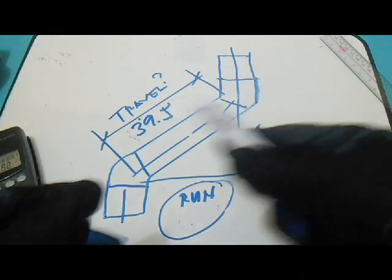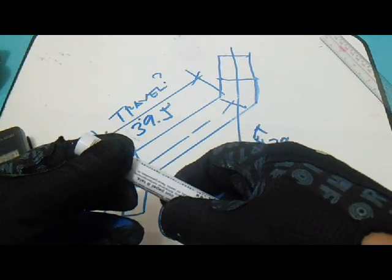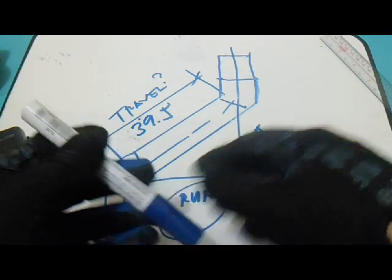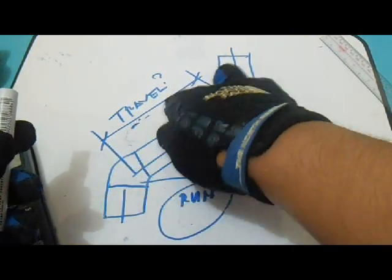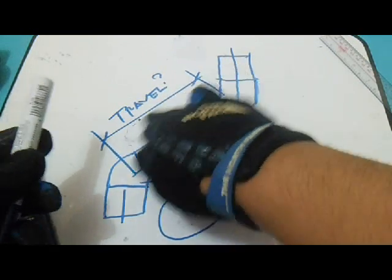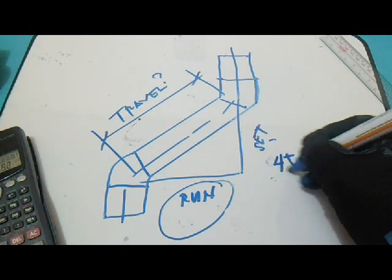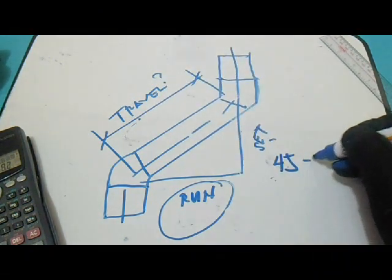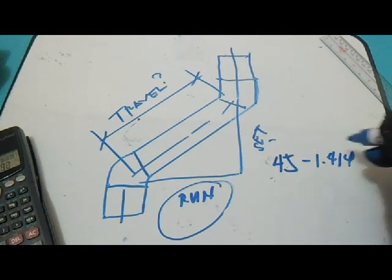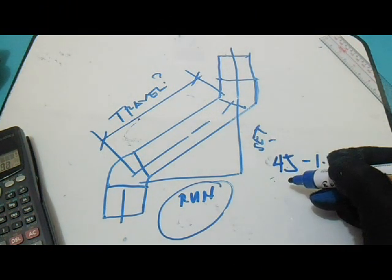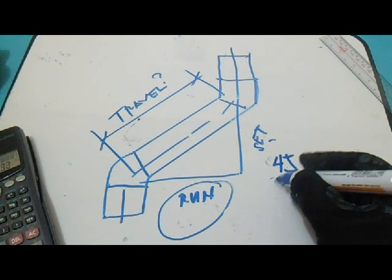And how if our degree is 60 degrees? Okay, we will compute this travel for the 60 degrees. For the 45 degrees to get this travel is 1.414, and also if our elbow is 60 degrees, multiply it to 1.414.